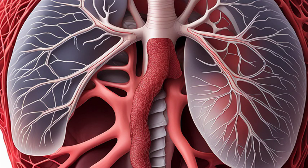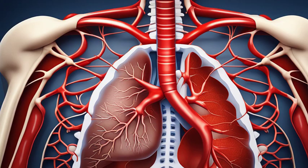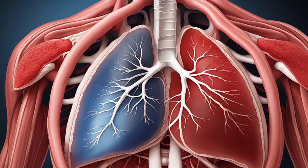Chronic thromboembolic pulmonary hypertension is a rare but serious condition caused by blood clots that persist in the lungs. It can lead to increased pressure and structural changes in the pulmonary arteries.